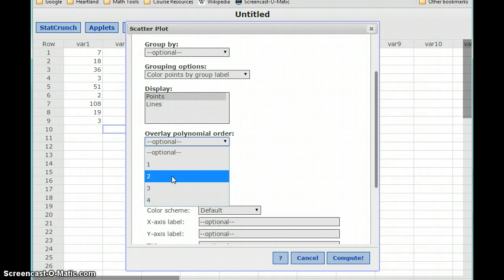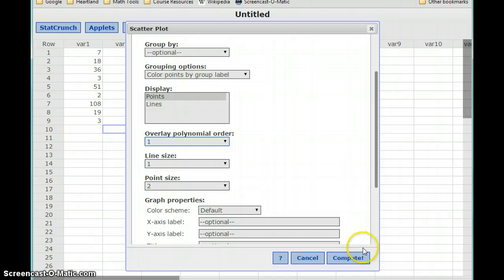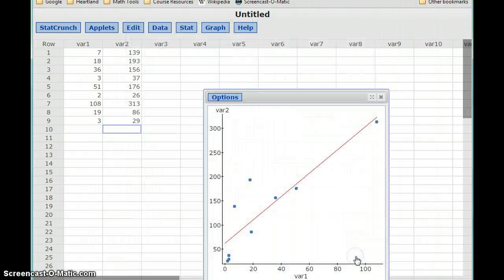2 would be a second degree polynomial, so we start to get into parabolas and things like that. But we're going to be only interested in straight line patterns or linear models. So we're going to overlay a polynomial of order 1 and click Compute.